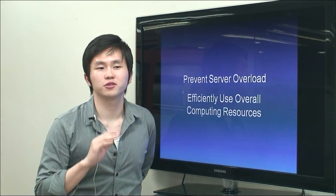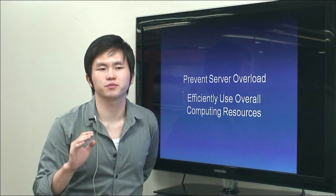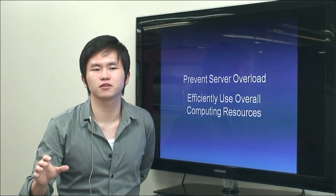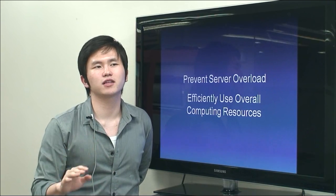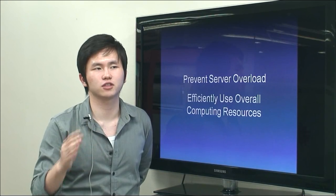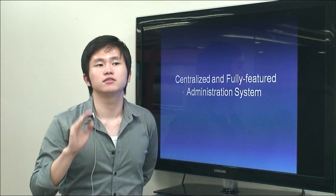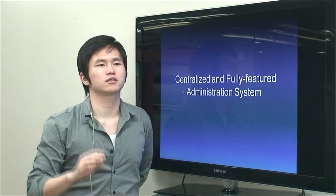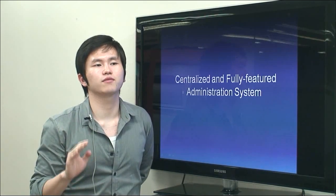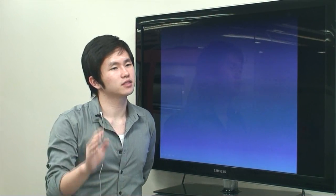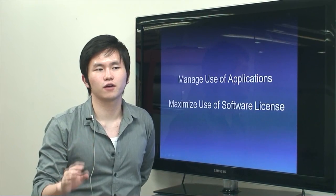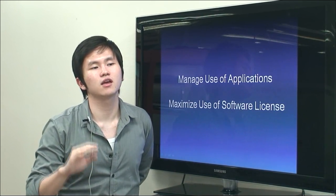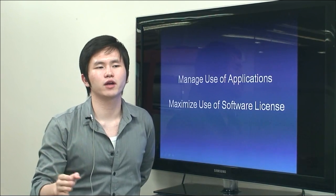Some may worry about server overload, but you don't need to. Zstream uses the client PC's resources for computation within the applications. It also has its own overload prevention mechanism that distributes the uploaded pack evenly to several streaming servers, and the client gets streamed from the optimized server — preventing possible server overload and letting your company use overall computing resources more efficiently. Zstream also comes with a centralized, fully-featured administration system, allowing your company to maximize use of purchased software licenses and letting administrators efficiently manage application use across client PCs. The built-in management system allows administrators to allocate licenses across different user or software groups and provides statistical data on application and server usage. As long as concurrent use stays under the license count, more users can use the software anywhere, anytime, on any working PC.